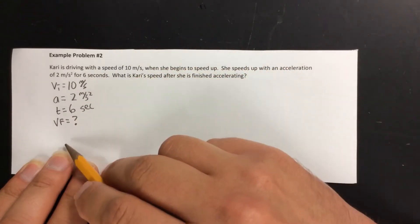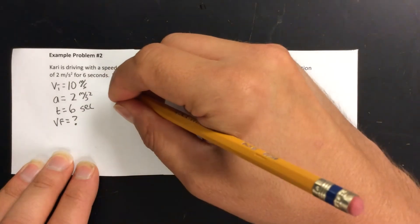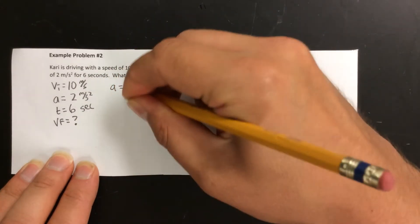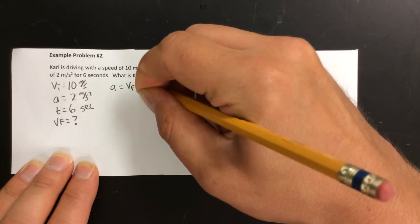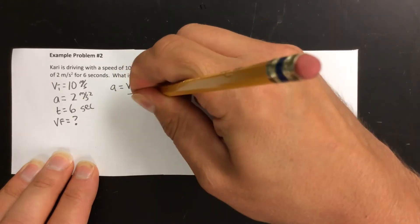So we made our list. We'll next write our original formula. A equals VF minus VI all over t.